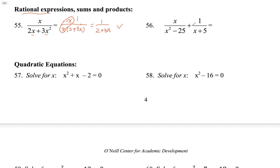Problem 56 — we want to add two rational expressions. From a previous example, we recognize this is a difference of two squares, because 25 is 5 squared. So the denominator x squared minus 25 can be factored as (x minus 5)(x plus 5). The difference of two squares factors as two conjugates — one with minus and one with plus.